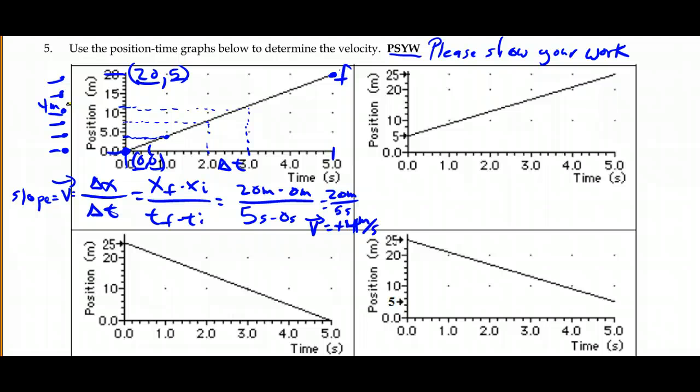Now, in the next one, we're going to figure out the slope again. Now, this is a little different. Our starting position is not 0, 0. But I'll still pick that point. At 0 time, 0 seconds, I'm at 5 meters of position.